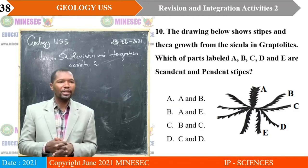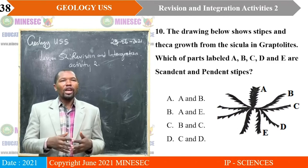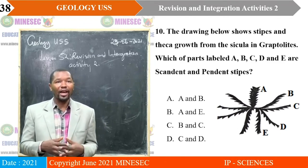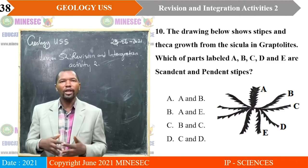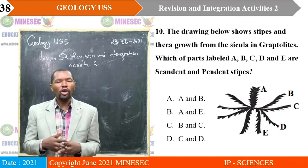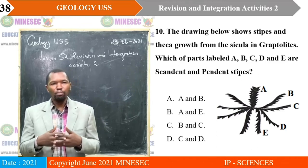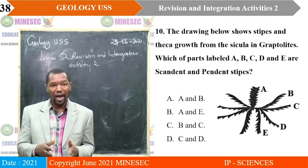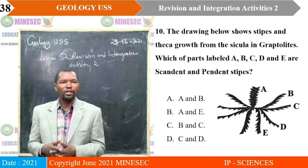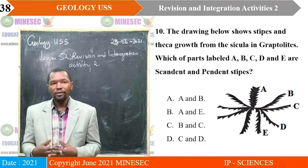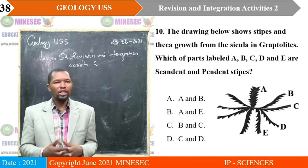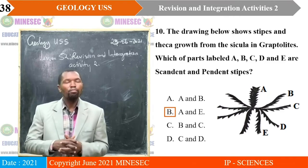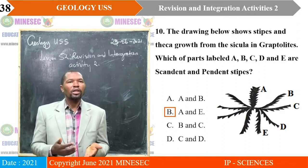Question ten: the drawing shows styles and types of growth from circular in graptolites. Parts labeled A, B, C, D, and E — which are scandent and pendent types? A. A and B, B. A and E, C. D and C, D. C and D. Correct answer is B — A is scandent and E is pendent.